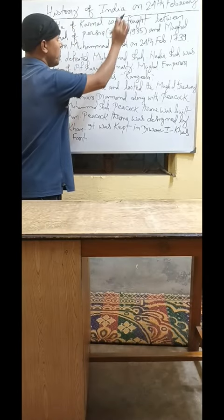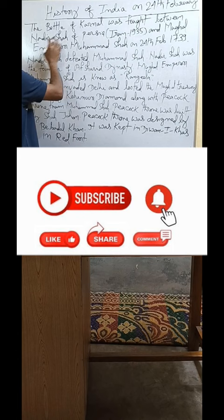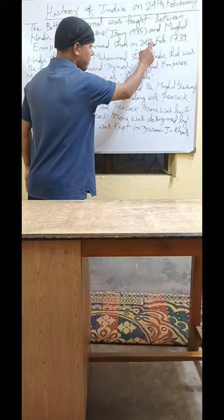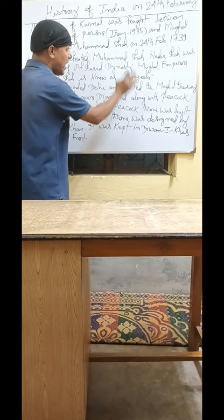History of India on 24th February. The Battle of Kandana was fought between Nadir Shah of Persia and Mughal Emperor Muhammad Shah on 24th February 1739. Nadir Shah defeated Muhammad Shah.